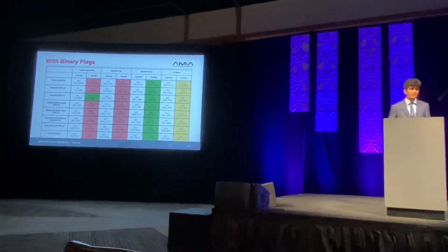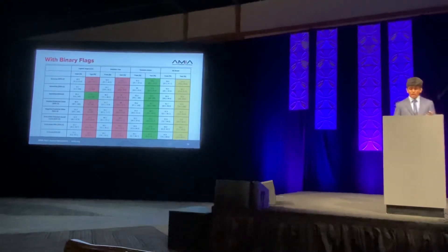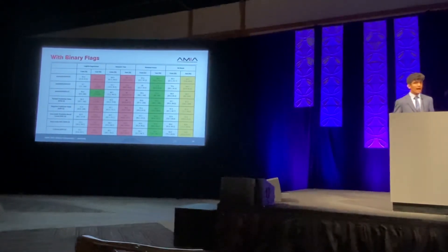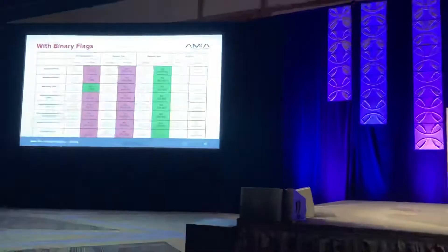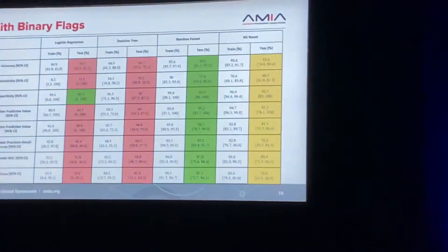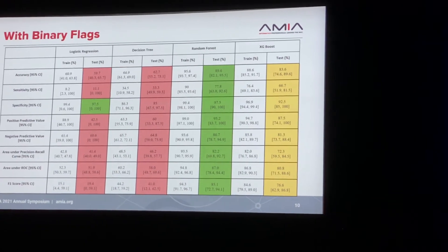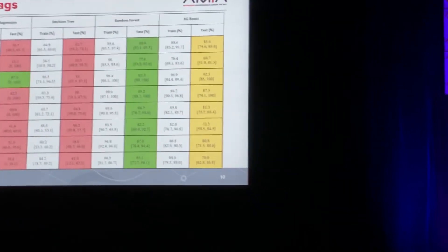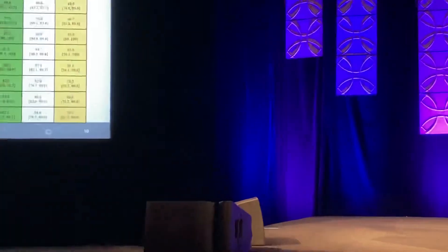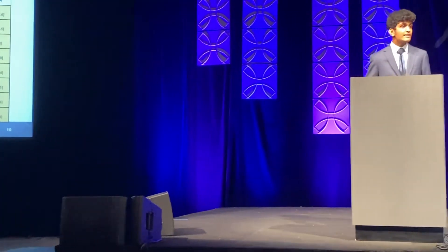Here are the results with the binary flags. The difference here is that the random forest classifier outperformed all models by a wide margin — its accuracy is 89.6%, while the XGBoost accuracy regressed to 83.6%. The high sensitivity indicates the model is able to predict most of the readmitted patients, and the high precision indicates that it does so with extremely high accuracy. That's ultimately the goal of this research.